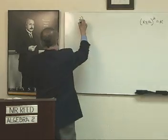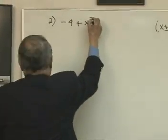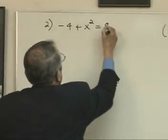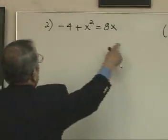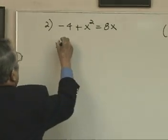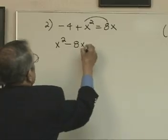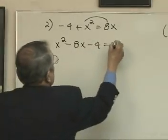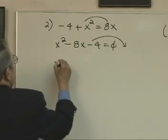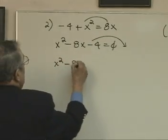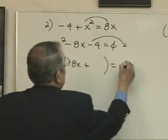Let's try our second one here. -4 + x² = 8x. Well, the first thing I have to do is put it in the correct format. x² - 8x - 4 = 0. Then I have to isolate the constant. So I get x² - 8x + something = 4.